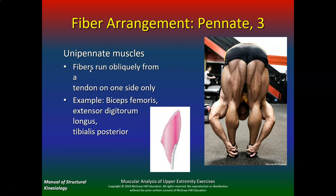Unipennate muscles — fibers run obliquely from a tendon on one side only. An example would be the biceps femoris. The extensor digitorum and the tibialis posterior are also examples, but the main one is the biceps femoris.